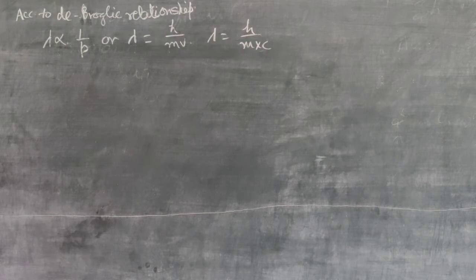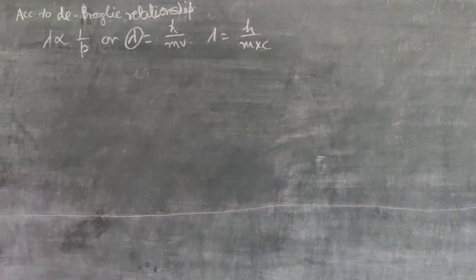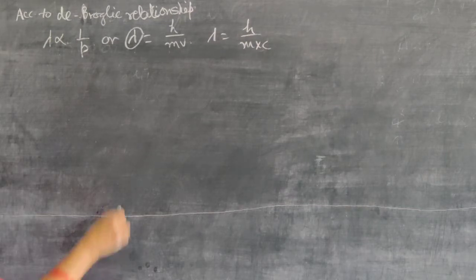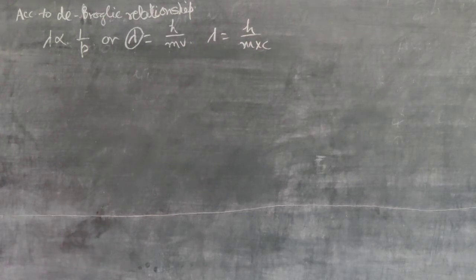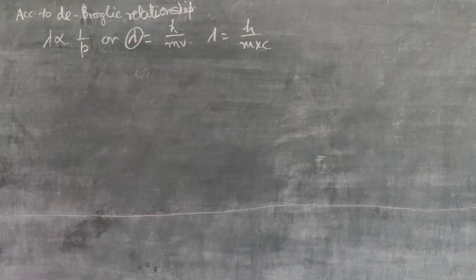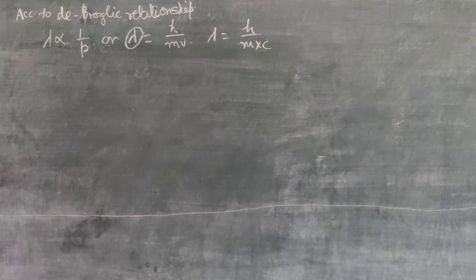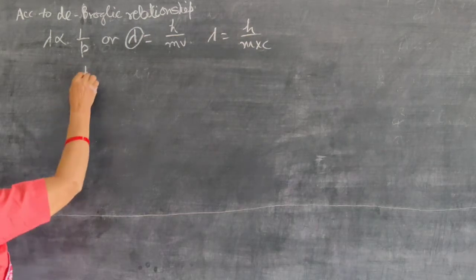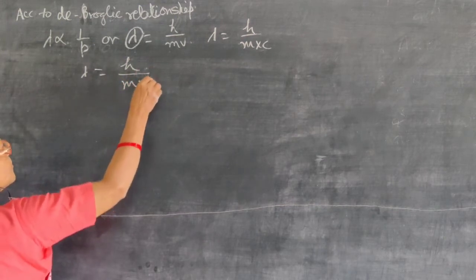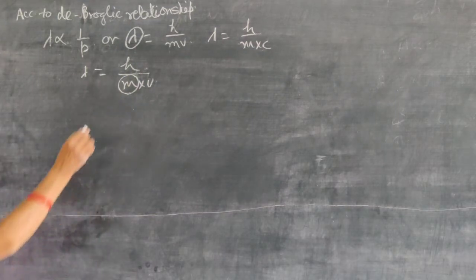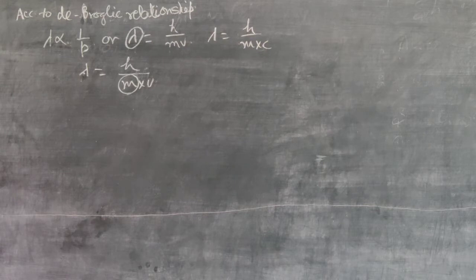According to the de Broglie relationship, when we apply it for particles, the wavelength is very important. For particles which are moving, we can represent their wavelength. Particles which have a mass greater than even one milligram will have a very small wavelength. This wavelength is important only for particles which have insignificant mass. So the de Broglie relationship is only applicable for subatomic particles which have negligible or very small masses.